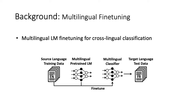Before I answer this question, let me first introduce multilingual language model fine-tuning. This figure shows a typical procedure of multilingual fine-tuning for cross-lingual classification: the multilingual pre-trained language model is first fine-tuned on training data in the source language, and then evaluated on test data in target languages.